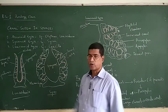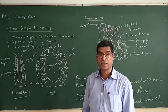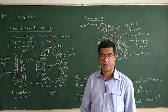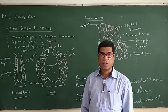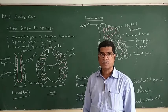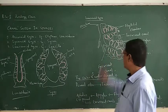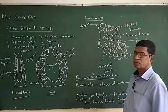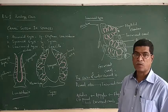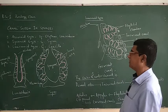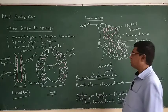In the leuconoid type, the water canal system is much more complicated due to the process of outward folding of the wall of the sponge. This more complicated water canal system is the leuconoid type of sponges.